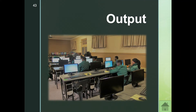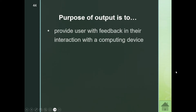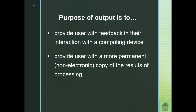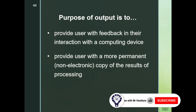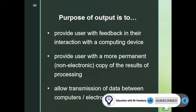Welcome learners. We are continuing in module 1.2, picking up from output. We spoke about input, and now we're looking at output devices. Output gives us the results of processing. The purpose of output is to provide a user with feedback in their interaction with a computing device, provide a more permanent copy of results, and allow the transmission of data between computers and electronic devices.